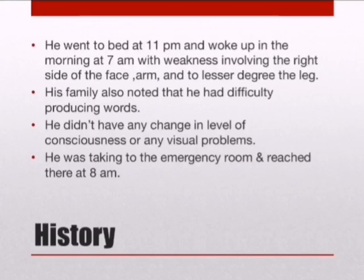The patient went to bed at 11 p.m. and woke up at 7 a.m. with weakness involving the right side of the face, arm, and to a lesser degree, the leg. This means the onset is vague, as he woke up with the deficit. Knowing the exact stroke onset time is critical, since for ischemic stroke we must open the occluded artery as fast as possible. Right-sided weakness localizes the stroke to the left side of the brain, as brain insults cause contralateral body and face symptoms.